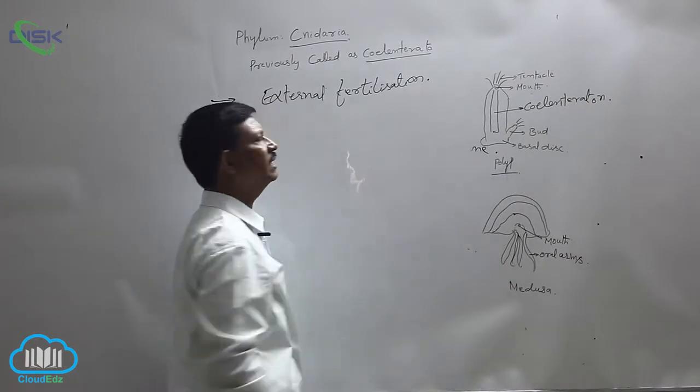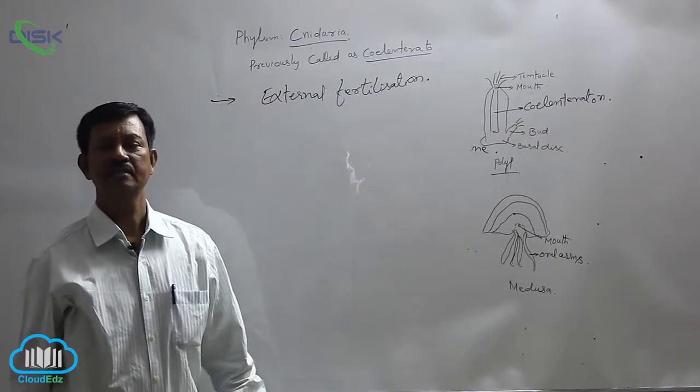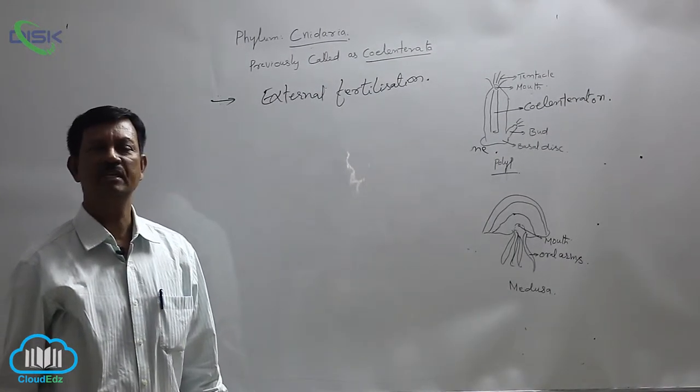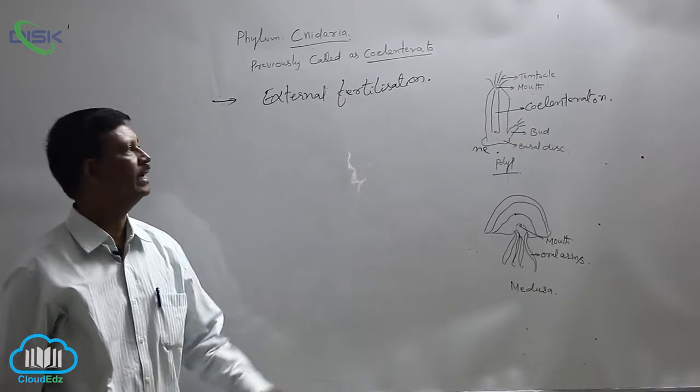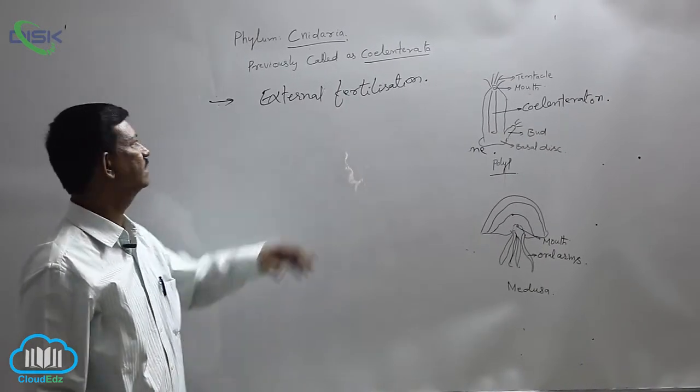External fertilization occurs when male and female gametes are liberated into the water and their union takes place outside the body, hence they are known as external fertilization.